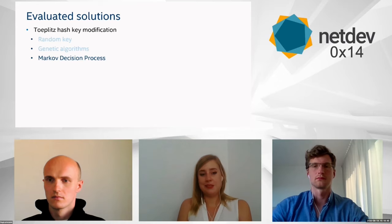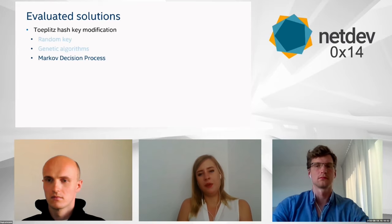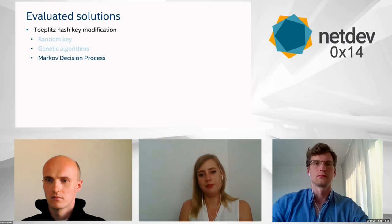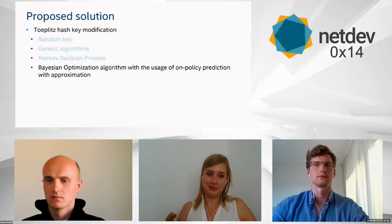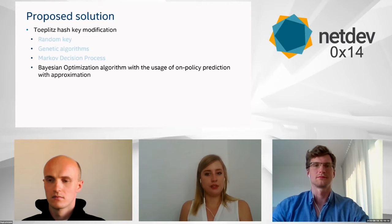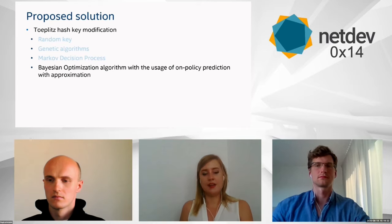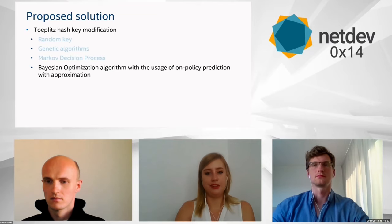We don't want to dive deep into the technical details of the Markov decision process implementation. At some point we got the impression we were going too deep and it was time to try something less complicated — like neural networks. That may sound a bit scary, but the final solution we believe may help is described as a Bayesian optimization algorithm with usage of own policy prediction and with approximation. We don't have enough time to go into full AI details, but you can reach us by email. For now, I'll describe the idea behind this in a friendly way.